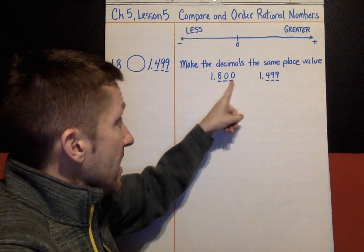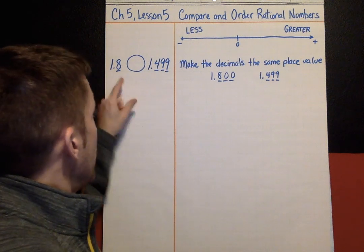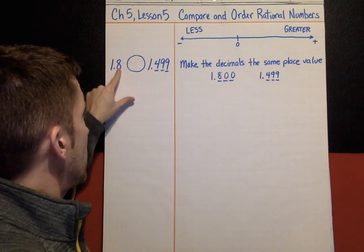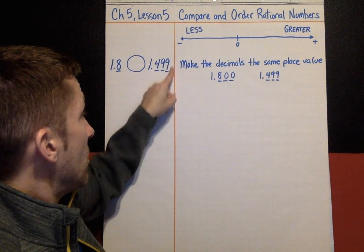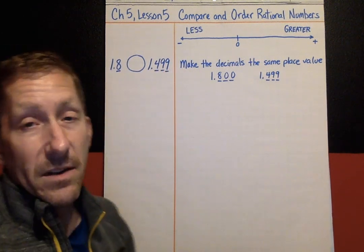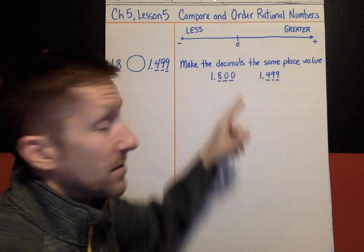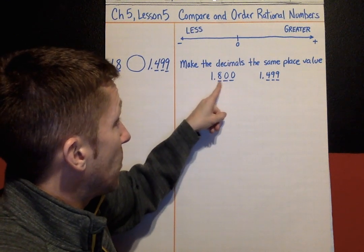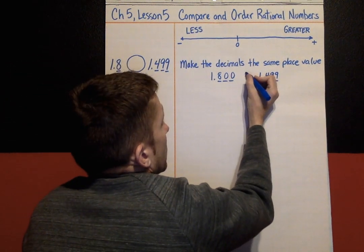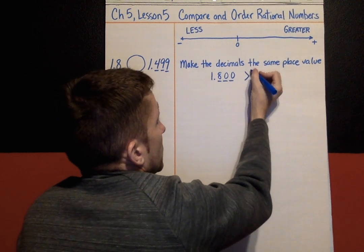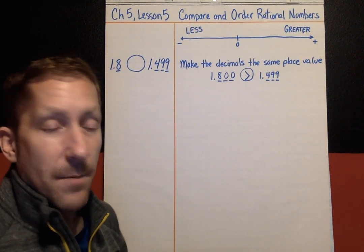What's greater — 1.800 or 1.499? Many of you know just by looking at the place value that 1.800 is greater. A lot of kids get confused and think 499 is bigger than 8, but if you make them the same length you won't make that mistake. 1.800 vs. 1.499 after the decimal — the inequality that works is greater than. That's the strategy: make the decimals the same place value.